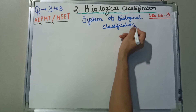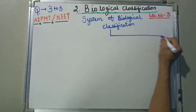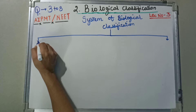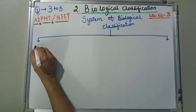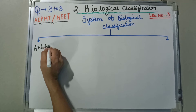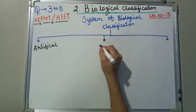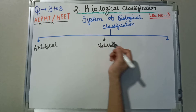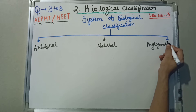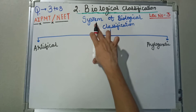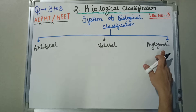In the systems of biological classification, it can be divided into three major parts. The first we call artificial, the next we call natural, and the last we call phylogenetic.